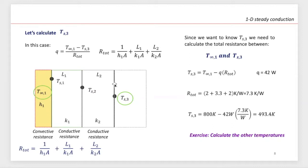In this case, delta T is going to be the difference between surroundings one and TS3, the one that we want to calculate. And now we have to count how many resistances we have between those two temperatures. We have one convective because we have a fluid-solid interface, one conductive because of the first layer, a second conductive because of the second layer — a total of three resistances: two conductive and one convective.